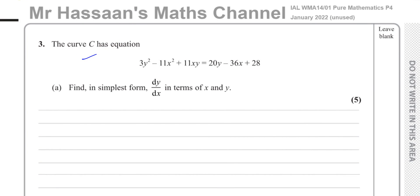Question number 3, part A. This is from January 2022, the unused paper, Pure Mathematics P4 from the International A-Level Edexcel. It's an unused paper, the one that wasn't used in January 2022.